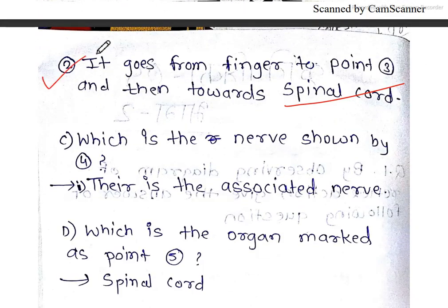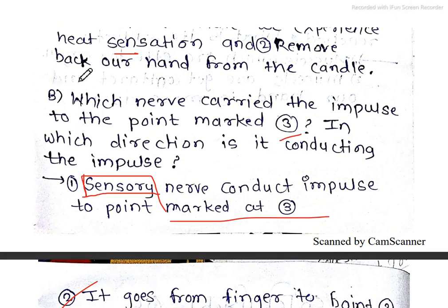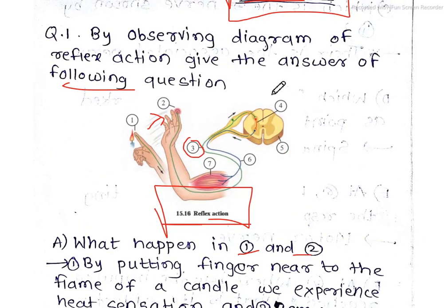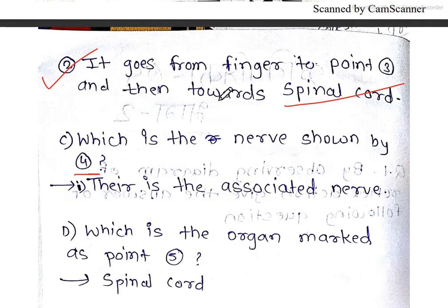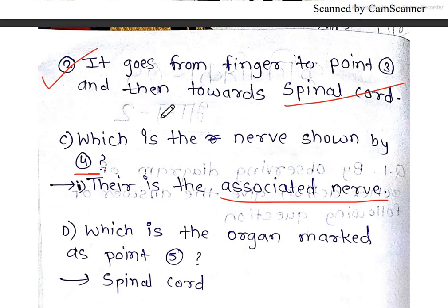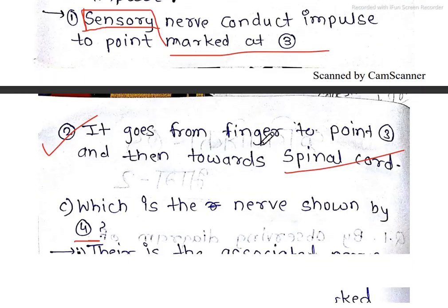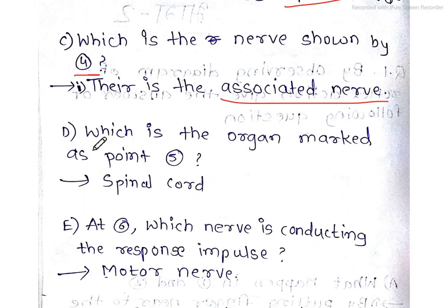Part C: Which is the nerve shown by the point 4? Point 4 is shown by the red point. There is the associated nerve.